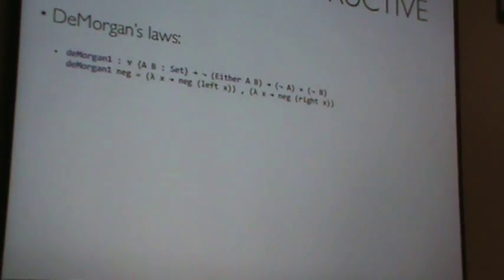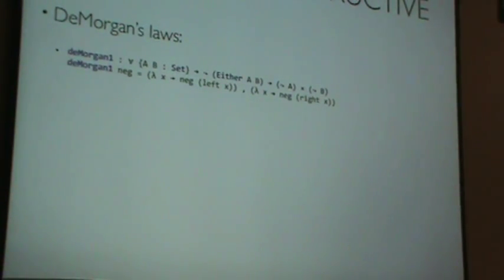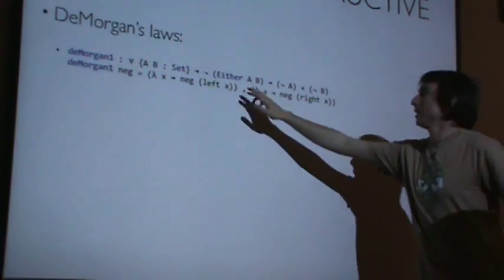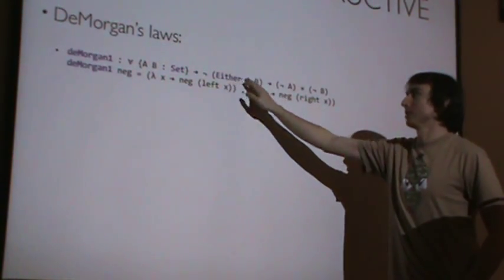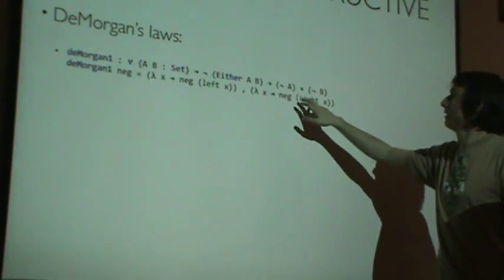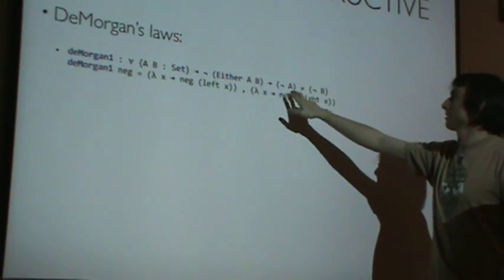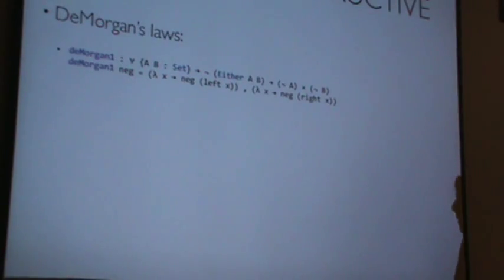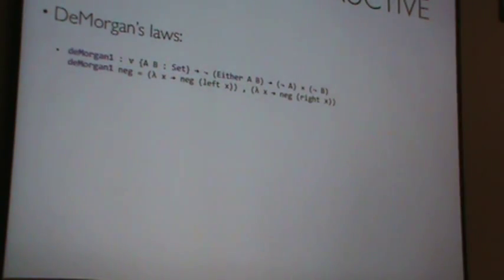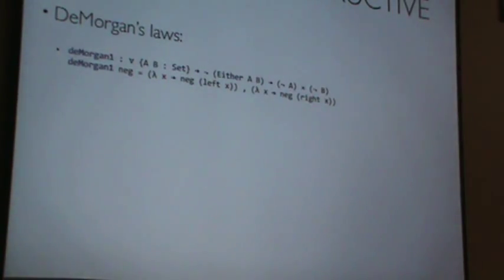This is an expression of one of De Morgan's Laws as Agda. 'Not A or B' — that is, neither A nor B — implies 'not A and not B'. And the proof of that is a simple pair.